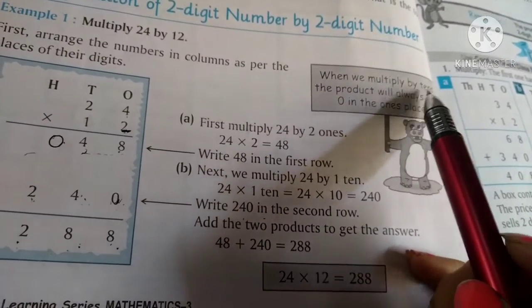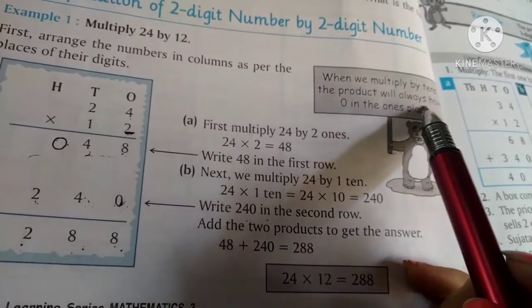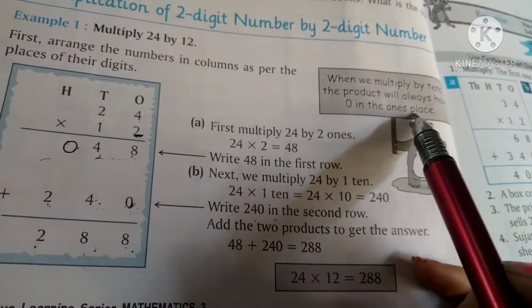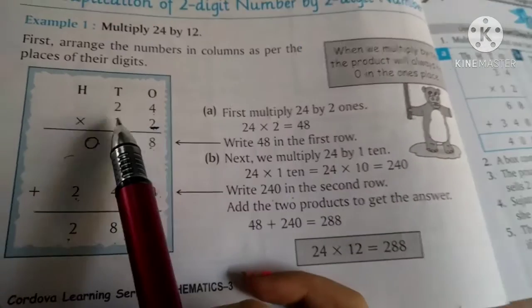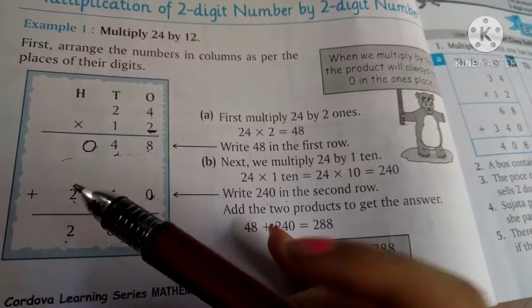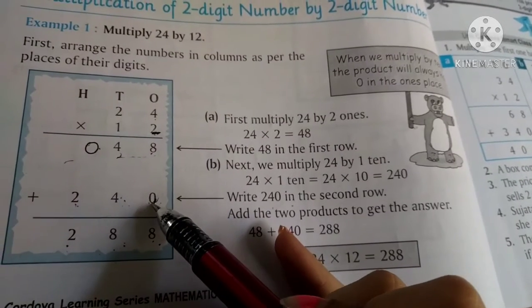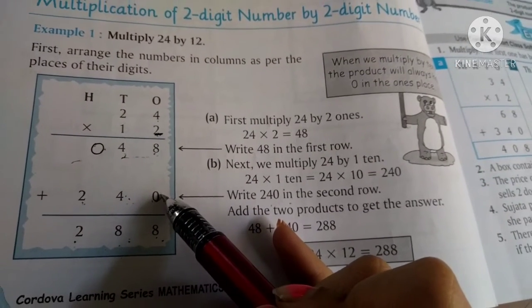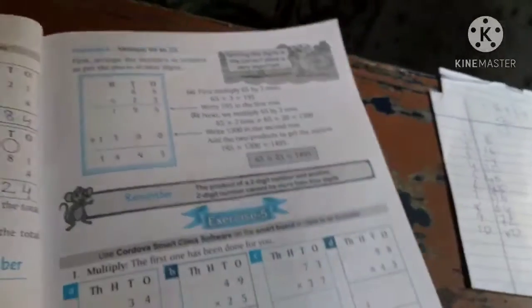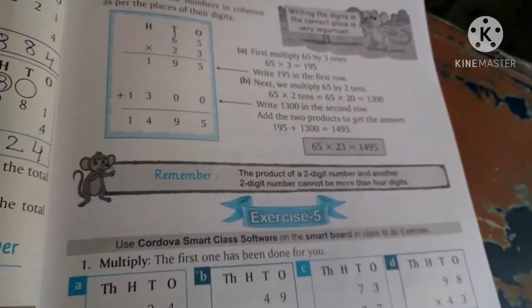When we multiply by 10s, the product will always have 0 in the 1's place. So when we have two-digit numbers, in the second step, we first put 0. This is the multiplication rule. Let us see another example.